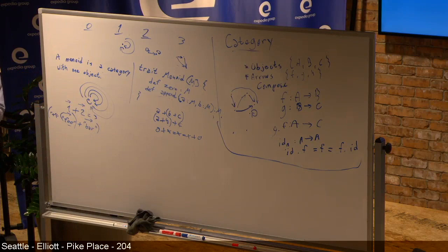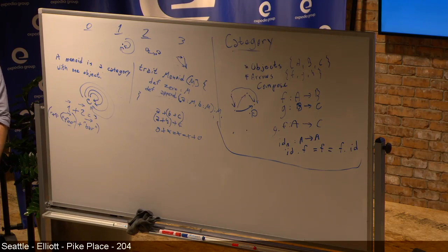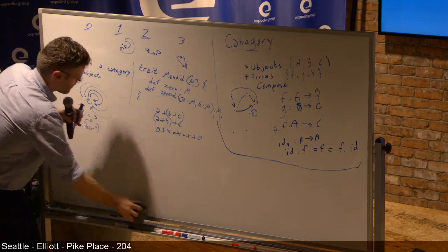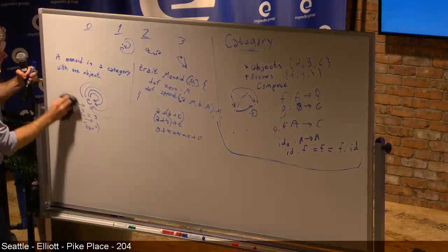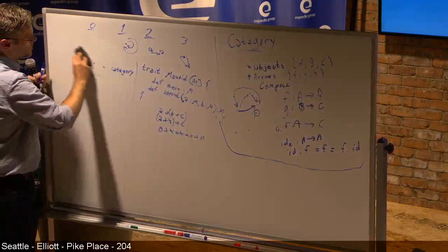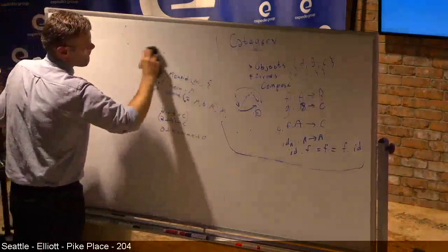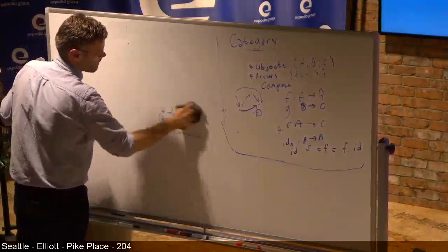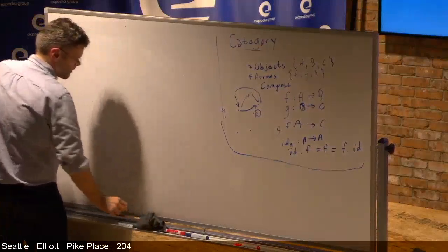There are lots of other examples of categories. Let's leave the definition up and do some really simple ones. To construct a category we need objects, arrows, and a composition that obeys these laws.